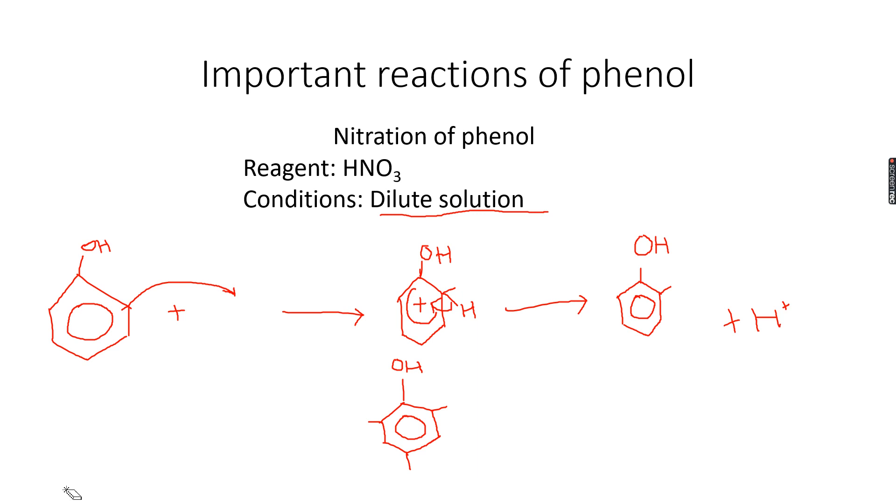For the nitration of phenol - if you remember when we were carrying out the nitration of benzene, we used concentrated HNO₃, 55 degrees Celsius temperature, and concentrated H₂SO₄ as a catalyst. In this reaction we only use a very dilute solution of HNO₃. So you can see how reactive phenol is in comparison to benzene - it proves that phenol is very highly reactive.